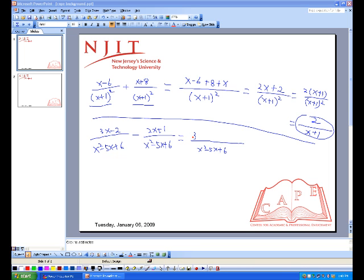It's equal to 3x minus 2, subtract minus 2x plus 1. When you have a subtraction of two rational expressions, the only thing you have to pay attention to is the sign changes.